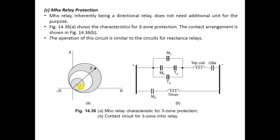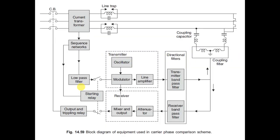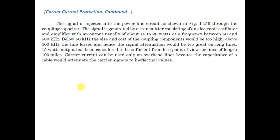For homework, study carrier current protection, which is another type of protection for transmission lines, also called carrier-aided protection of transmission lines, where modulation of a signal is done. It is well explained in the reference material — study it yourself. Next, notes on digital protection and numerical relays will be shared. I conclude here for today. Thank you.